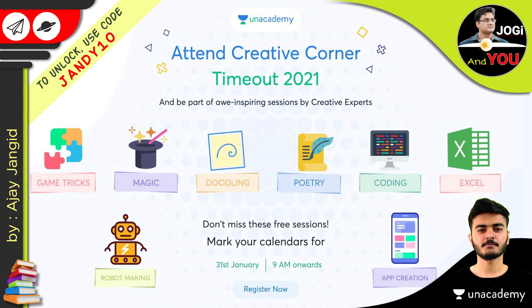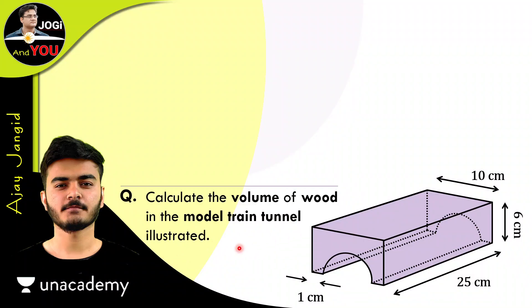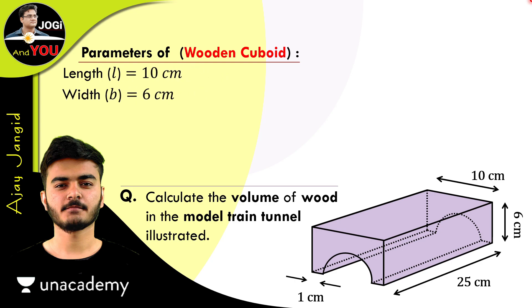So let's get back to the question. This is our question and this is the model of the tunnel. First of all, let's write all the given parameters of the wooden cuboid. The block we have is a cuboid. So what are the parameters of this cuboid? The parameters of this wooden cuboid are: length is 10 cm, width is 6 cm, and height is 25 cm. These are our measurements. You can change them in between, like you can say length is 25 cm or height is 10 cm, but we wrote them in this sequence because it will help us so we won't get confused in the next steps.